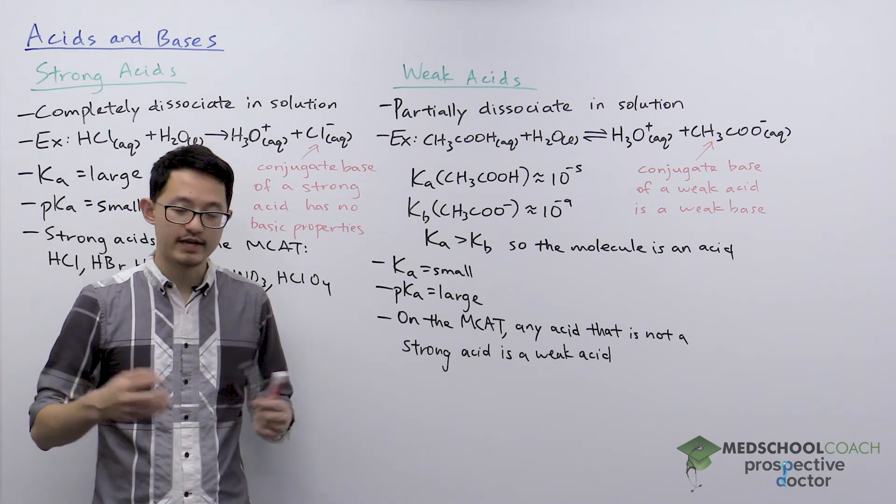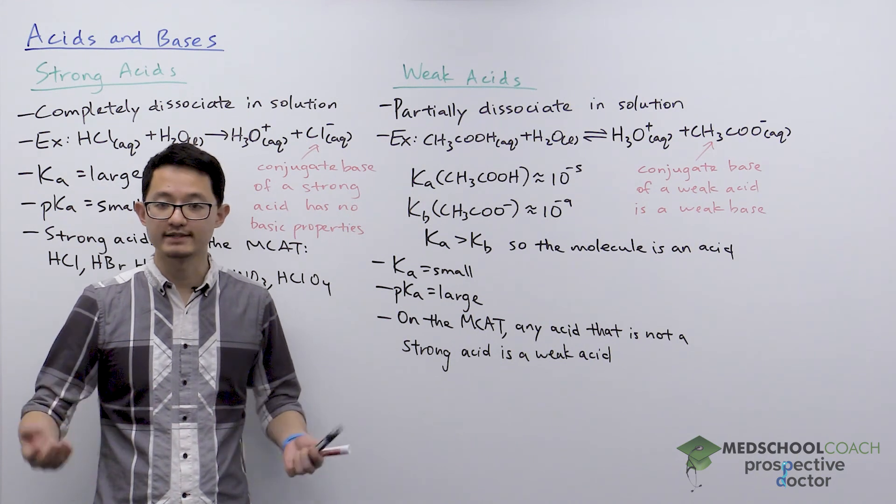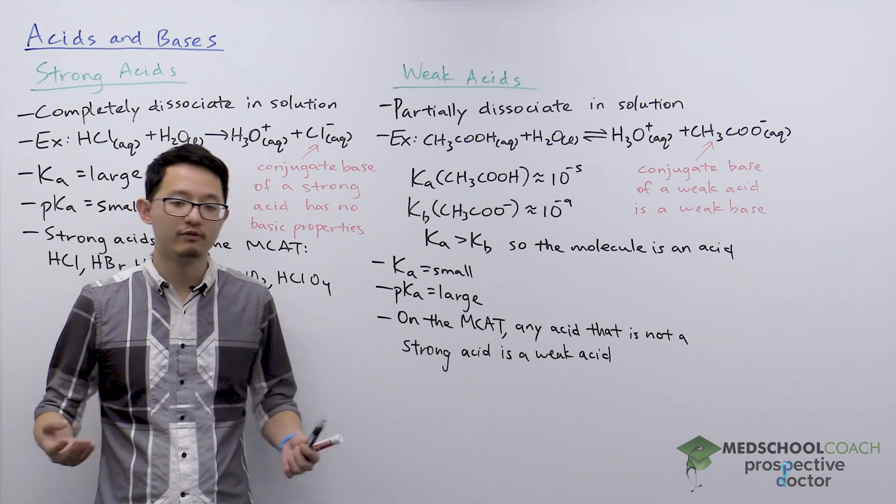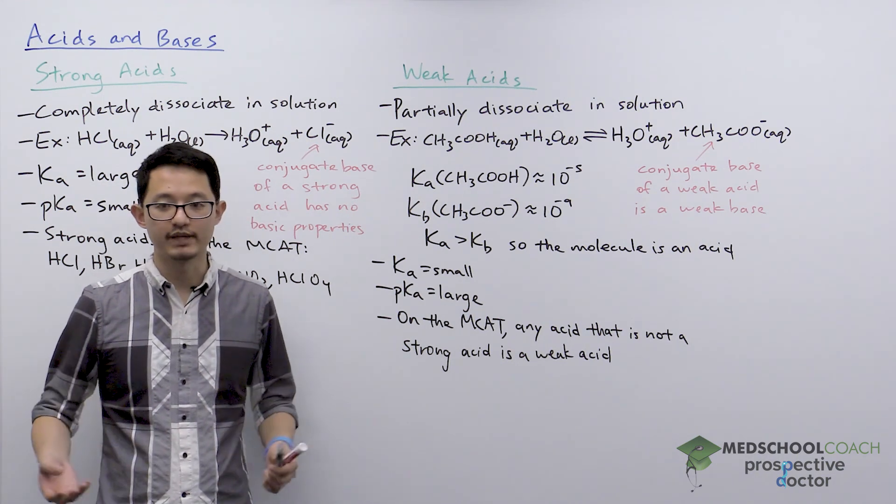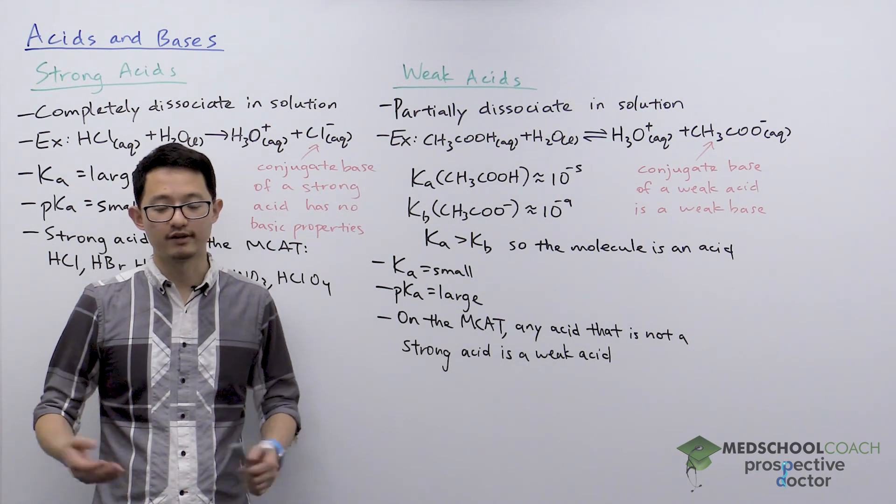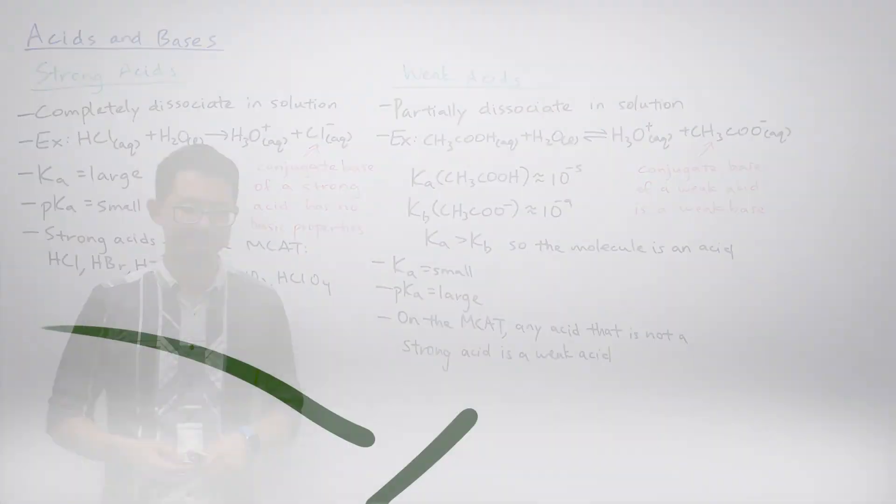Alright? Again, on the MCAT, if you see an acid, it's donating protons. If it's not one of the six strong acids, you're expected to assume that that is a weak acid. Okay. So that's how strong acids and weak acids work. In the next video, we're going to look at strong bases and weak bases. And we're going to see there are a lot of similarities between the two. We'll see you next time.